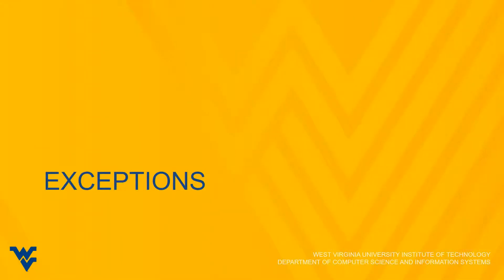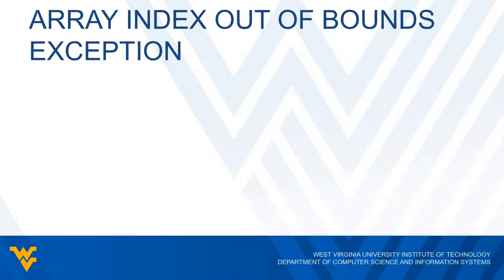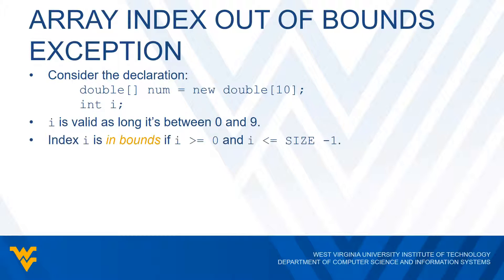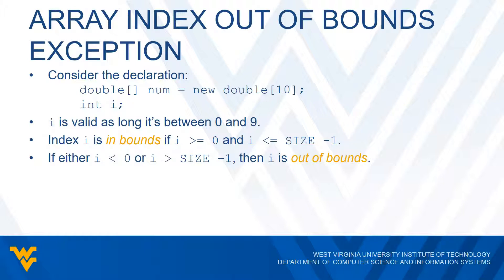We're going to look at a particular exception that occurs when dealing with arrays — a very common error. Let's say we have an array of doubles called num, set to new double[10], so it's an array of 10 doubles, and we have some integer i as our index. Index i is in bounds if i is greater than or equal to 0 and less than or equal to size minus 1. If i is negative or greater than size minus 1, then i is out of bounds.